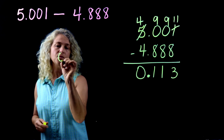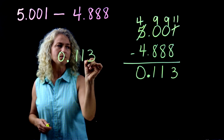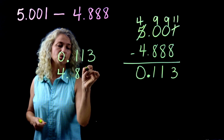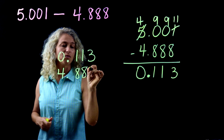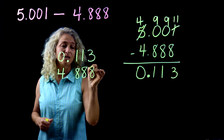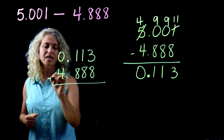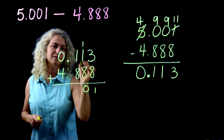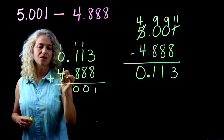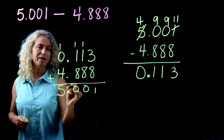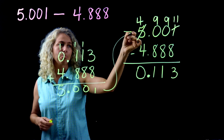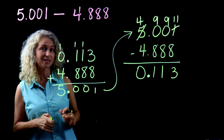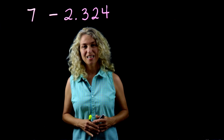Take your final answer and add it back to the number above it, and make sure you get your original first number. If you do, you know you got it right. Adding to check: we get four plus one is five, recovering our original number. We know it's correct because we checked it.